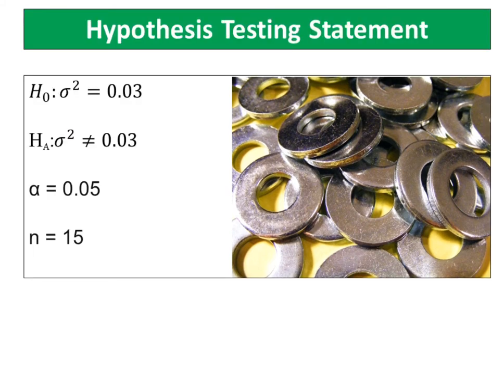The null hypothesis is the population variance is equal to 0.03, while alternative hypothesis is population variance differs from 0.03. The level of significance, alpha, is 0.05 and sample size is 15.